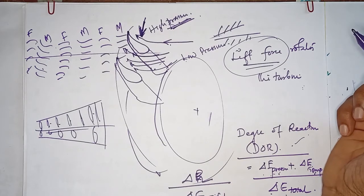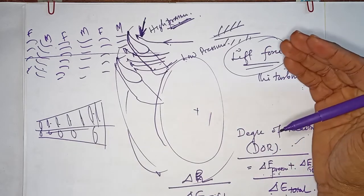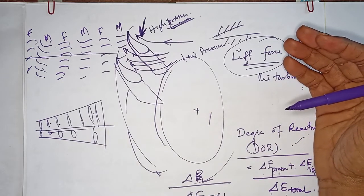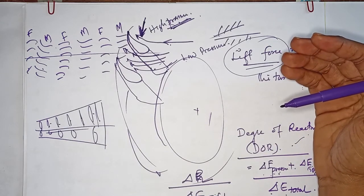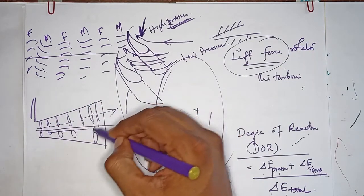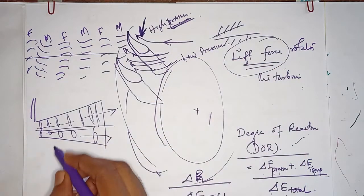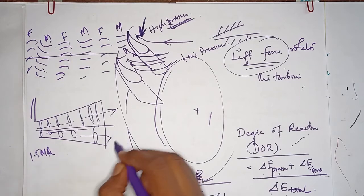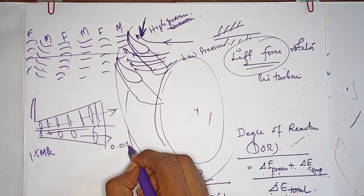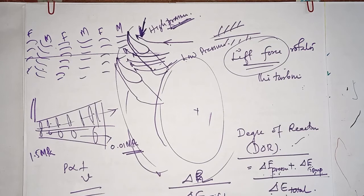As we go through the stages, there is a drastic pressure drop. The steam enters at high pressure and high temperature. For example, if the pressure is 1.5 MPa at entry, it may drop to 0.1 MPa at the exhaust. So the pressure drops significantly as the steam passes through successive stages.